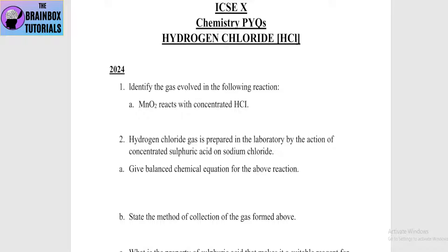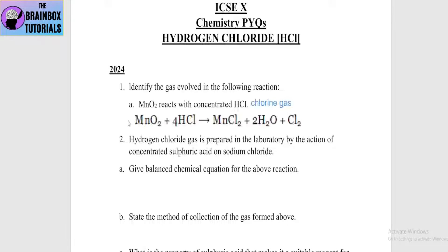So let's start from the Hydrogen Chloride chapter PYQs. The first question is: identify the gas evolved in the following reaction — MnO2 reacts with concentrated HCl. The reaction is: MnO2 + HCl → MnCl2 + H2O + Cl2 gas. If you identify the gas, the answer is chlorine gas.